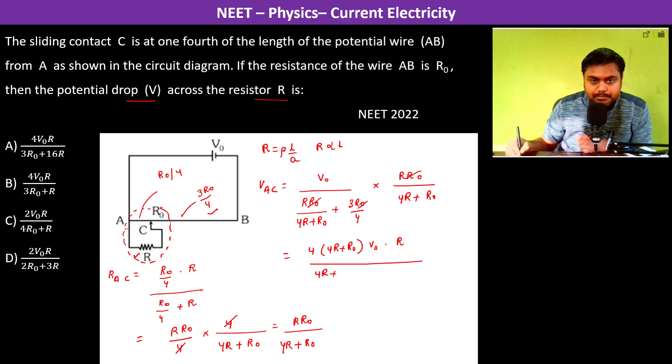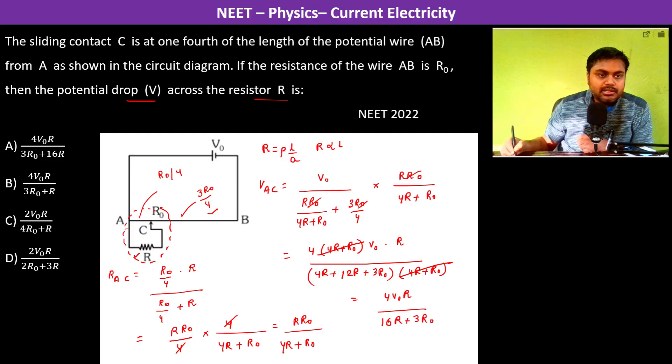We have 4R plus 12R plus 3R0. R0 cancels with this, so this is basically 4V0 R divided by 16R plus 3R0. Therefore the answer is going to be A.